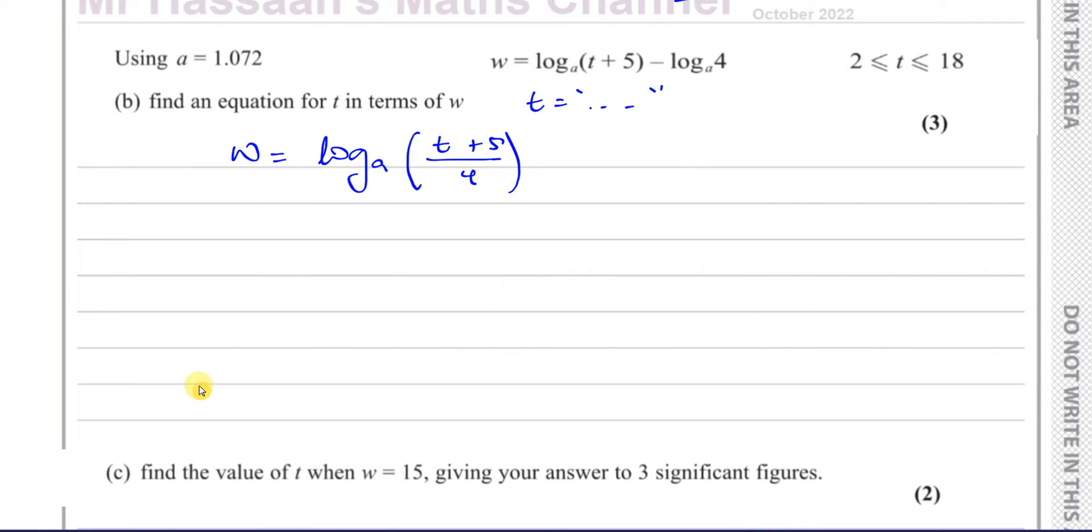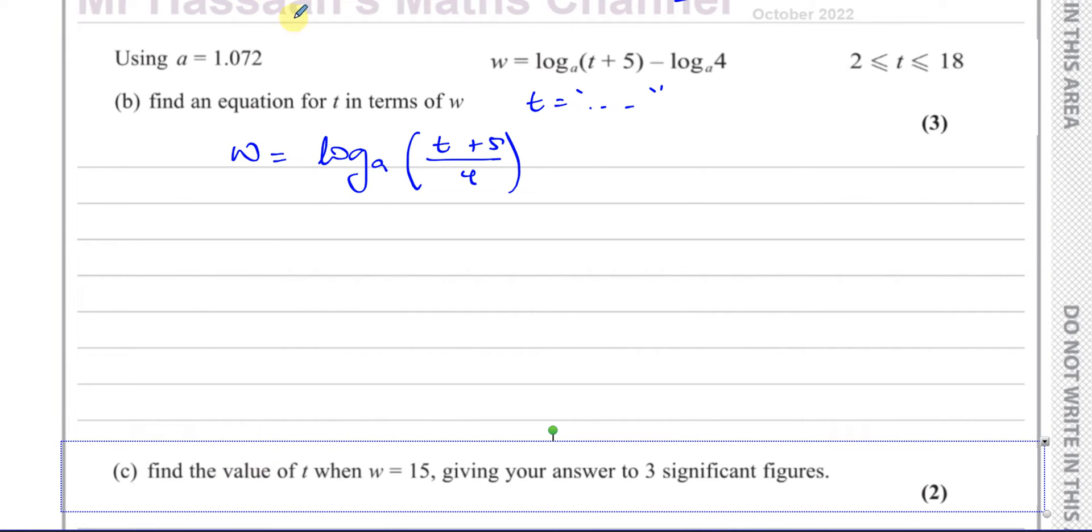And now we can use that same idea of the laws of logarithms or the meaning of the logarithm. So we can say that this is the base, this is the power. This is the base, a to the power of w is equal to (t+5) over 4.